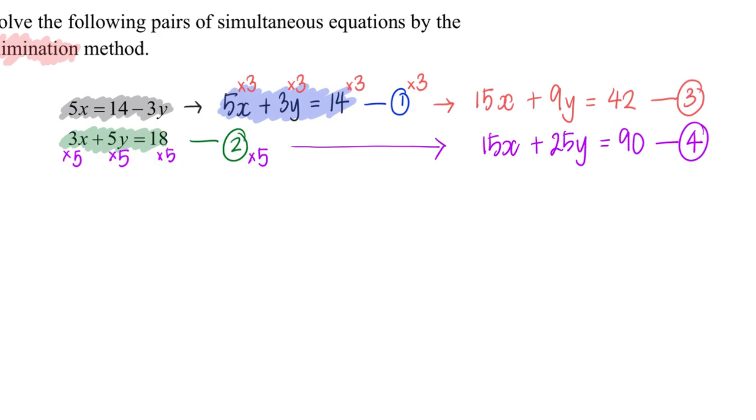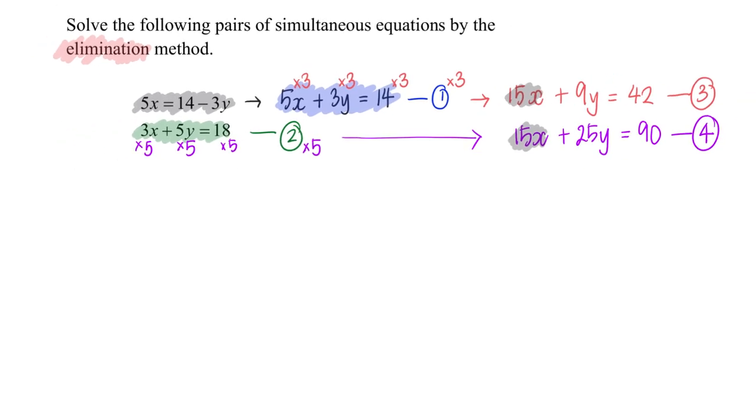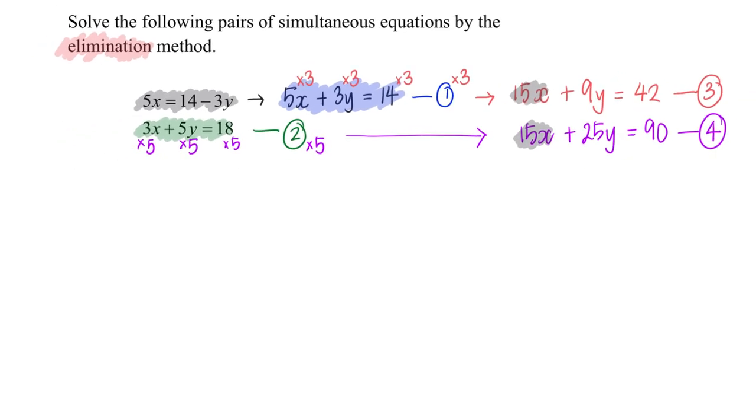So what do you think we should do to get rid of, to eliminate the 15? So this is something now for us to think about. I have 15x and 15x, both are positive.